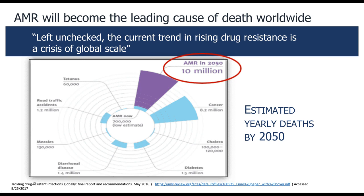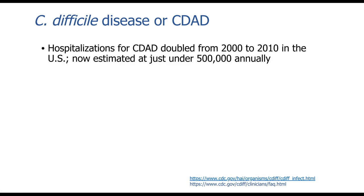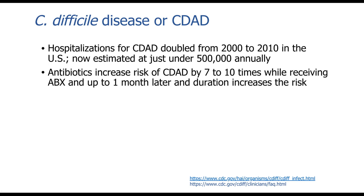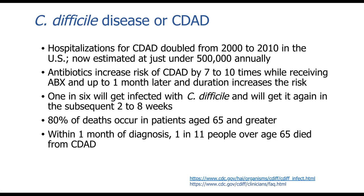Even if you don't die from resistant bacteria, consider scenarios like a scratch on your leg leading to a below-the-knee amputation. There's kidney injury and many other consequences. C. difficile infections now account for well over half a million hospitalizations per year. Antibiotics increase the risk of C. difficile-associated diarrhea 7 to 10 times while receiving antibiotics and for up to one month later. One in six who get infected with C. diff will get it again within two to eight weeks. Eighty percent of deaths occur in patients age 65 or greater, and within one month of diagnosis, one in 11 people over age 65 died from C. difficile-associated diarrhea.